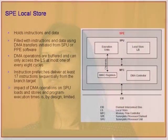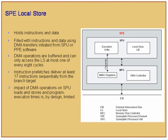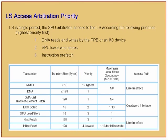The SP local store holds both instructions and data. In the 256 kilobytes of memory available, you have to fit both code and data sections. The instruction prefetch will deliver at least 17 instructions. Every DMA operation happens once in eight cycles. There's only one port for reads and writes, so three different kinds of operations share the local store: DMA reads and writes, SPU load and store operations, and instruction prefetch. The highest priority goes to DMA reads and writes, then loads and stores, then instruction prefetch.